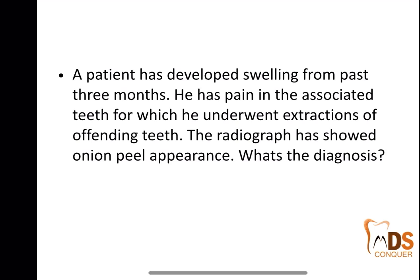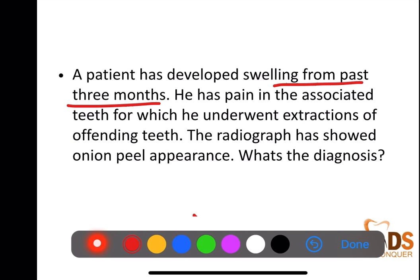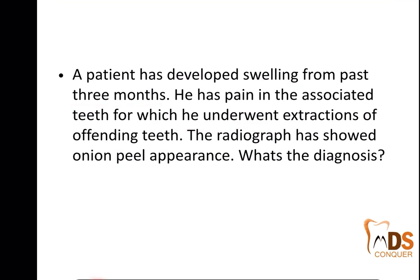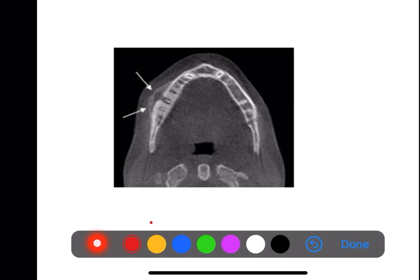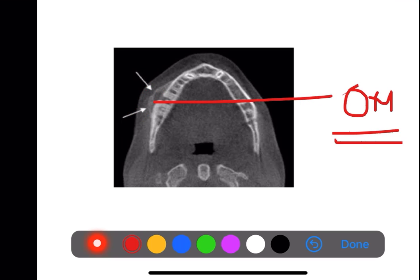Coming to the third case: a patient developed swelling over the past three months and had pain in the associated teeth requiring extraction. Very important: the question already states an onion peel or onion skin appearance. Because the teeth were painful and extraction was required, and because the radiograph has shown onion peel appearance on the axial section, this is of odontogenic origin. The onion skin appearance goes in favor of osteomyelitis — specifically, Garré's or proliferative osteomyelitis gives this peculiar onion skin or onion peel appearance.